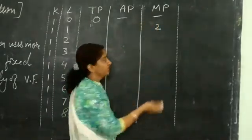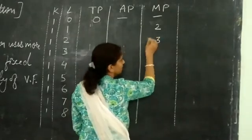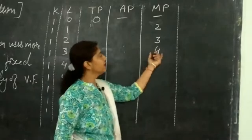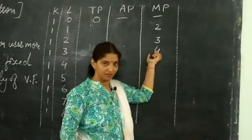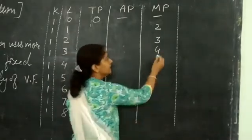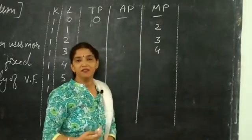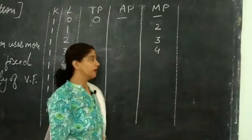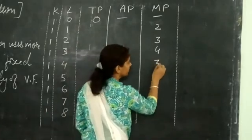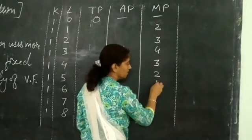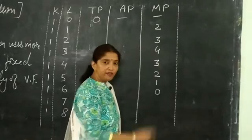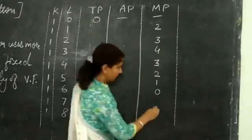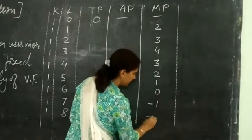After the first labor, MP increases: 3 with the second labor, then 4 with the third — assume this is the maximum marginal productivity. After this point, marginal productivity for the variable factor starts declining with more and more labor: 3, 2, 1, then it reaches 0, and then becomes negative: minus 1, minus 2.